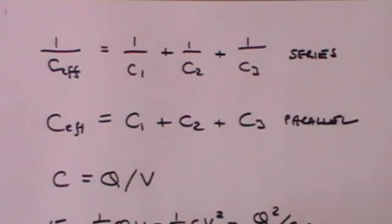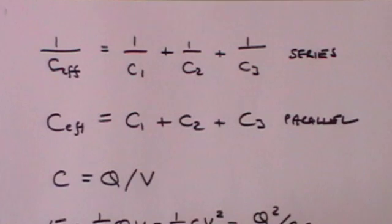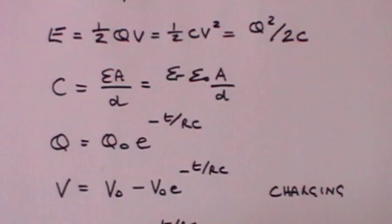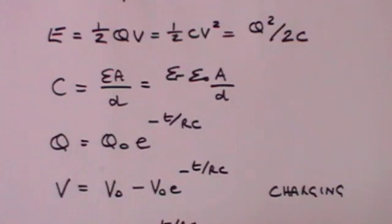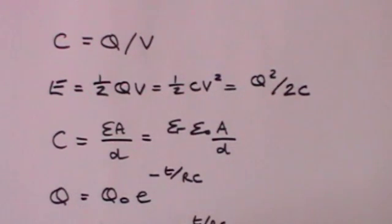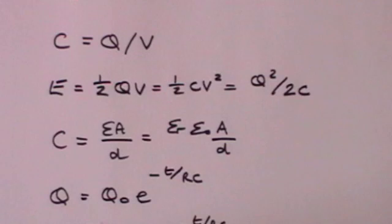Then the definition of capacitance: C equals Q over V — it is the amount of charge stored per volt. Then we get to the energy stored in a capacitor, which is a half QV, the charge times the voltage. If you substitute using C equals Q over V into half QV you can get half CV squared or Q squared over 2C — they're all the same thing.